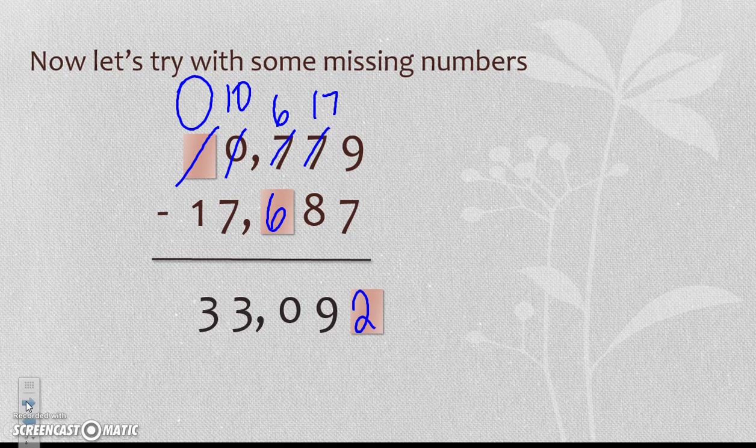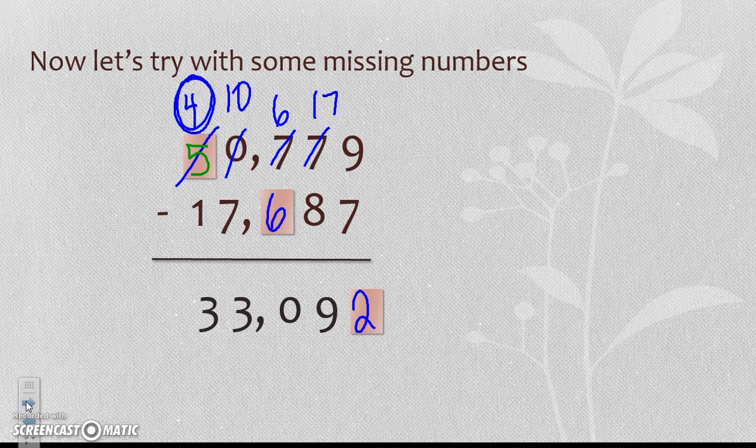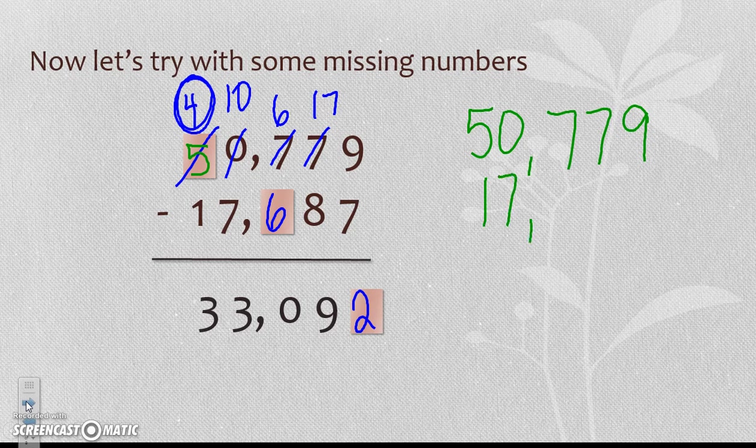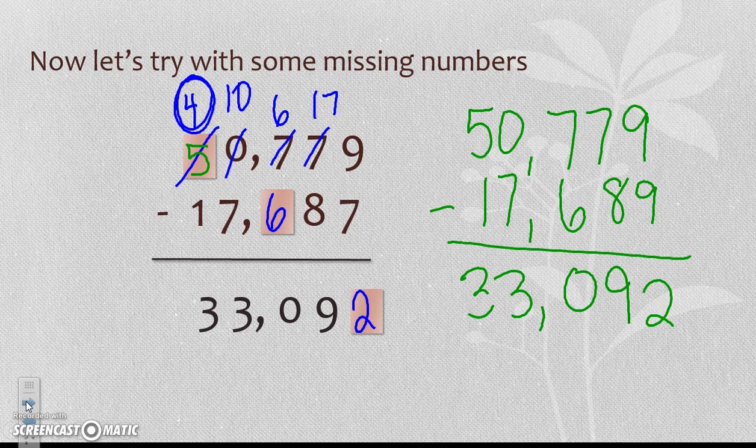Now I know I'm going to have 1 from something up here is going to be equal to 3. Well, 4 minus 1 is equal to 3. But my original number was not 4 because I regrouped, so my original number has to be 5. So when we rewrite the problem, we have 50,779 minus 17,689, and our final answer would have been 33,092.